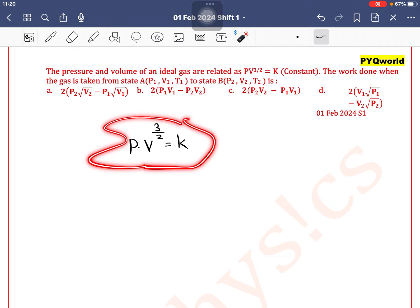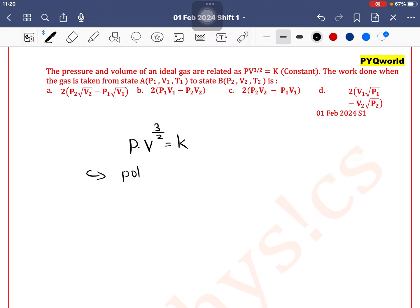So as the given equation is P into V to the power 3 by 2 is equal to constant, obviously it is a polytropic process.